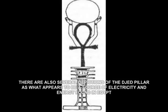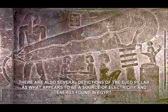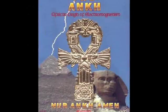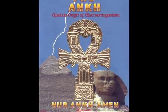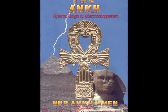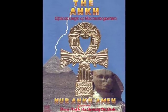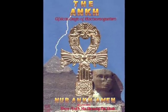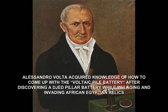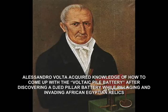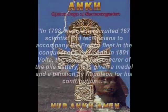There are also several depictions of the Z-Pillar as what appears to be a source of electricity and energy found in Egypt. In the book entitled The Ankh: African Origin of Electromagnetism, writer Nur Ankh Amun describes how Alessandro Volta acquired knowledge of how to develop the Voltaic Pile battery after discovering a Z-Pillar battery while pillaging an African-Egyptian relic.